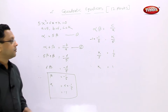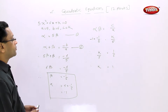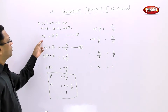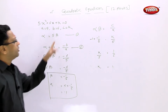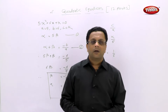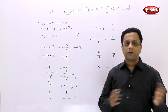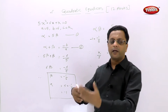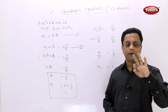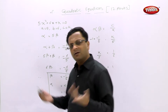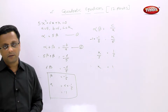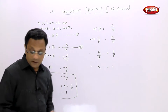This is quite simple. When one root is given as a multiple of the other, you get three equations in three variables and can easily find the answers. Let us see the second example.